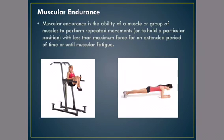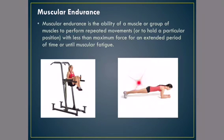Number four: muscular endurance. Muscular endurance is the ability of a muscle or group of muscles to perform repeated movements or to hold a particular position with less than maximum force for an extended period of time or until muscular fatigue. Right here we have a lady doing knee-ups — someone doing knee-ups with 60 seconds to do as many as possible would deal with muscular endurance. Also, the dead arm hang for as long as possible falls into the category of muscular endurance. And here we have planks, which we've been working on during our abdominal warm-ups.